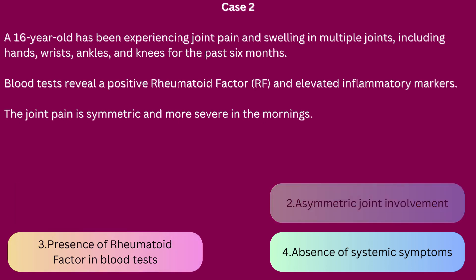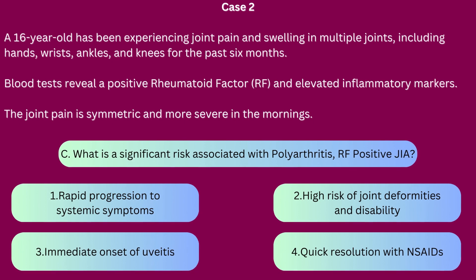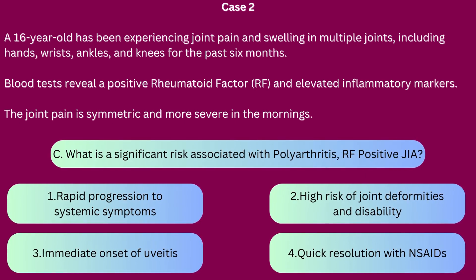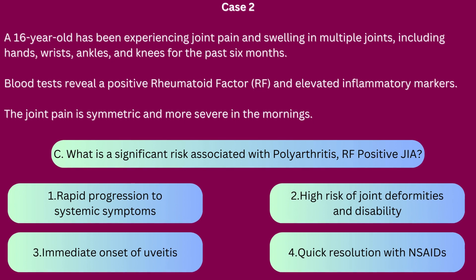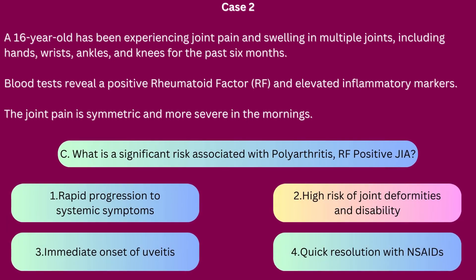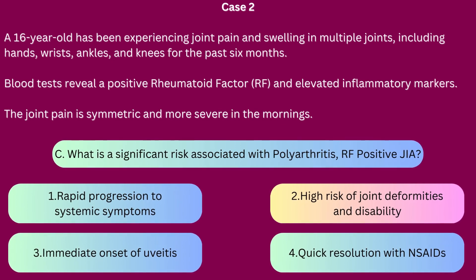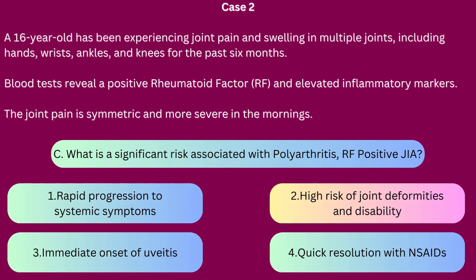Question C: What is the significant risk associated with polyarthritis rheumatoid factor positive? 1. Rapid progression to systemic symptoms, 2. High risk of joint deformities and disability, 3. Immediate onset of uveitis, 4. Quick resolution with NSAIDs. The correct answer is 2 — joint deformities and long-term disability if not treated aggressively. Early and aggressive treatment, including disease-modifying anti-rheumatic drugs and biologics, is crucial in preventing these outcomes.